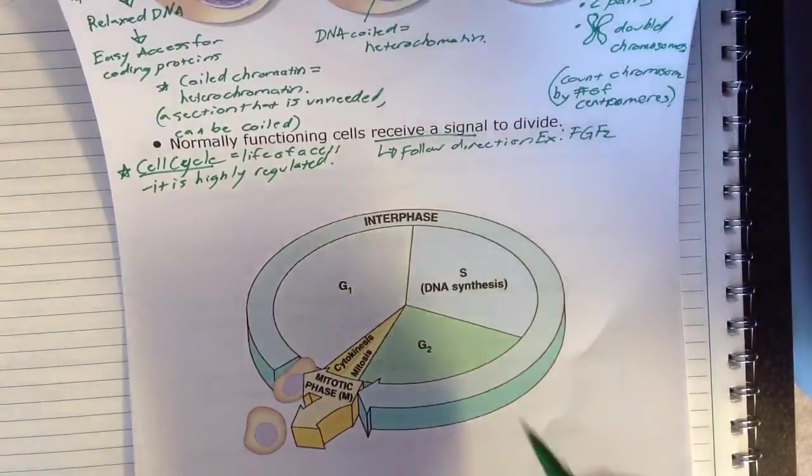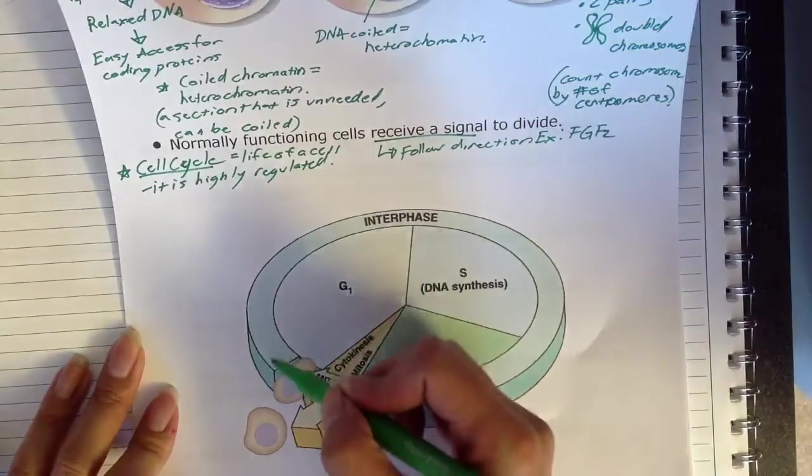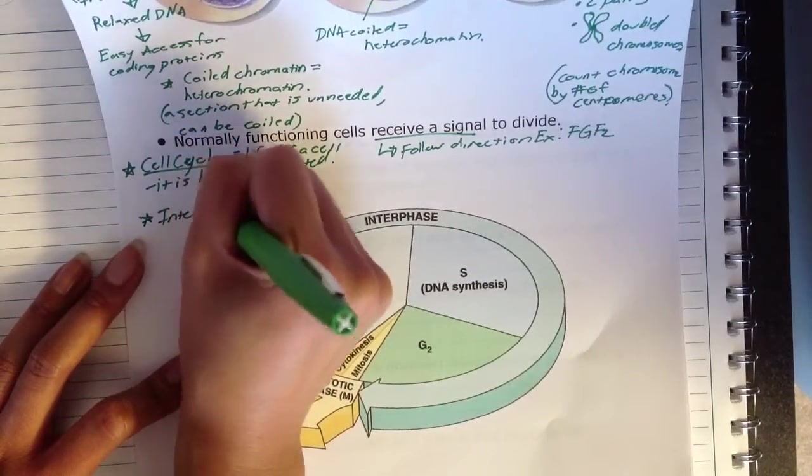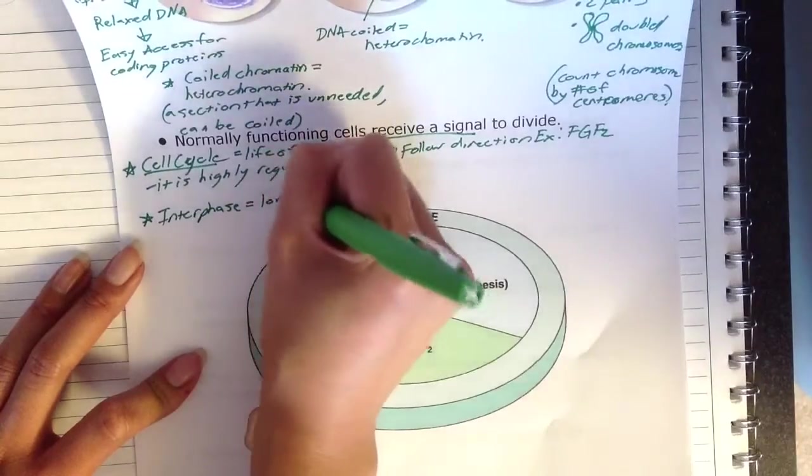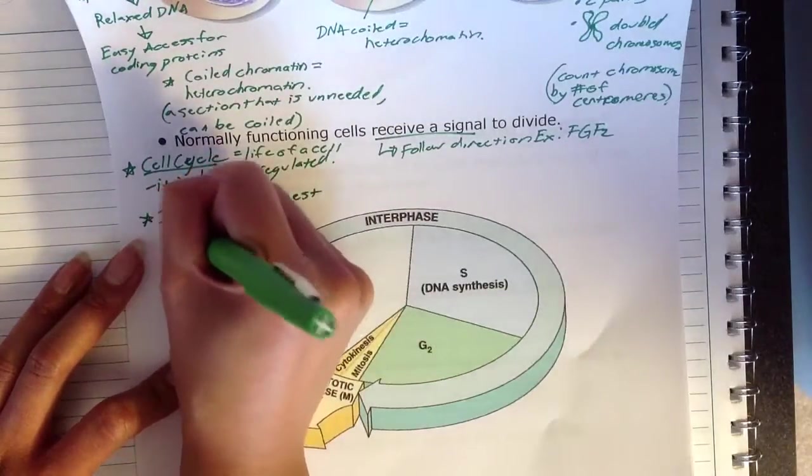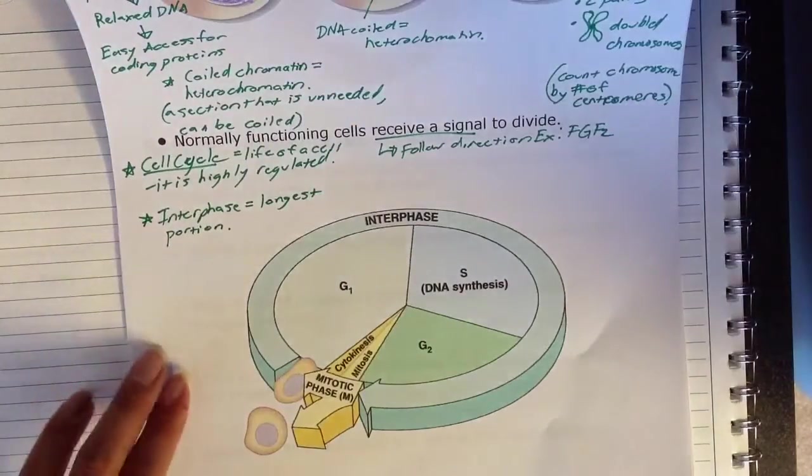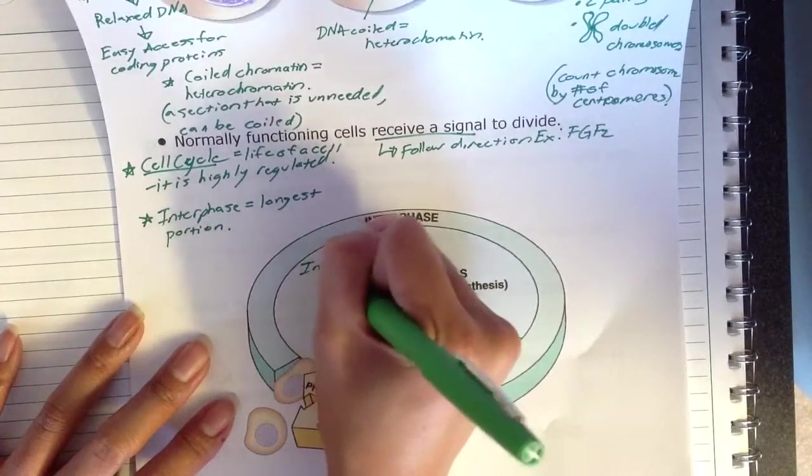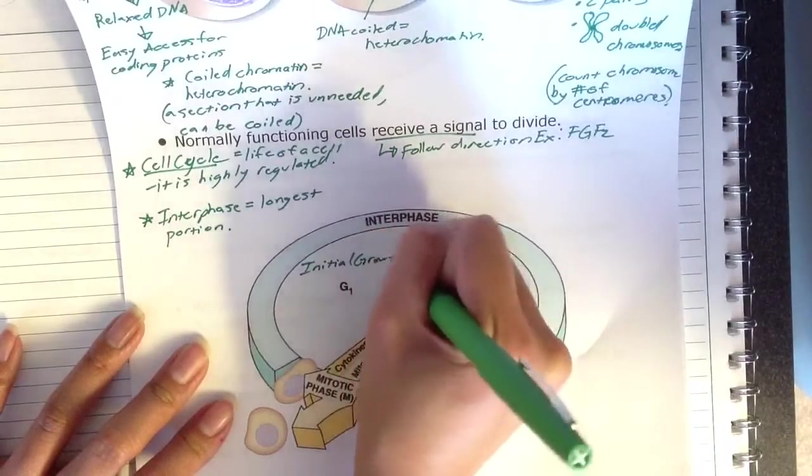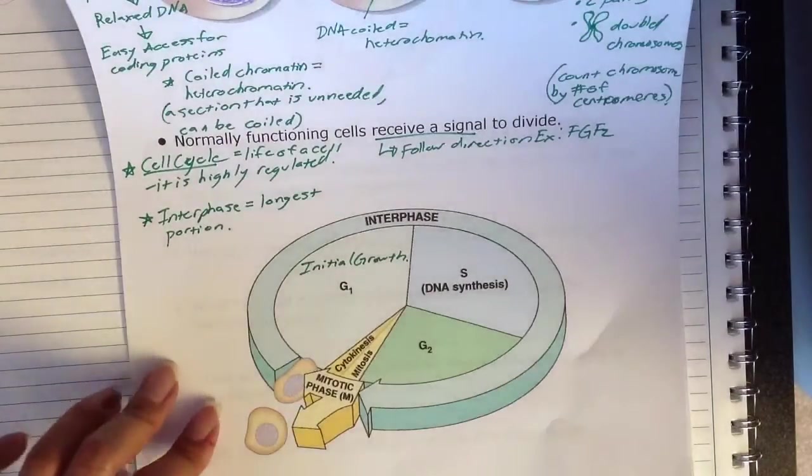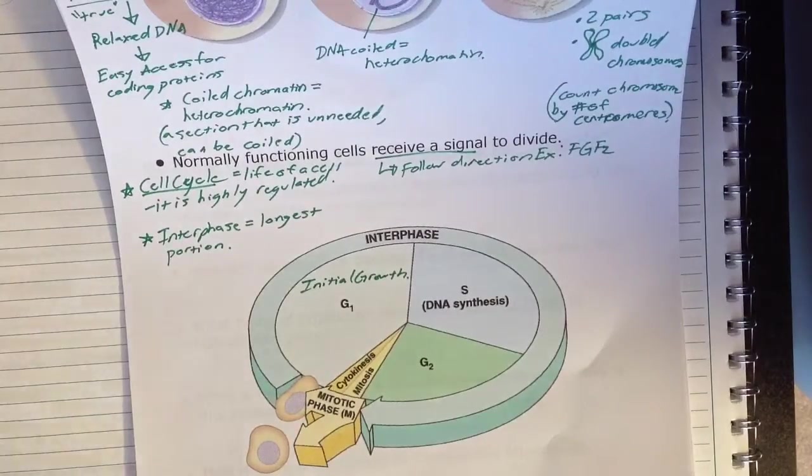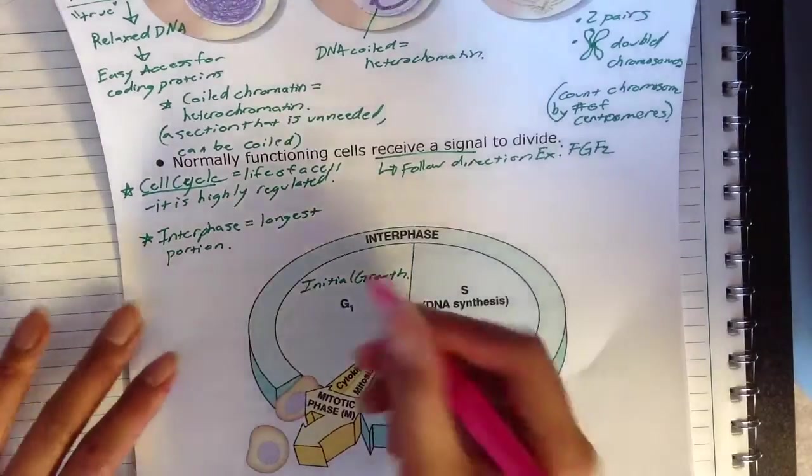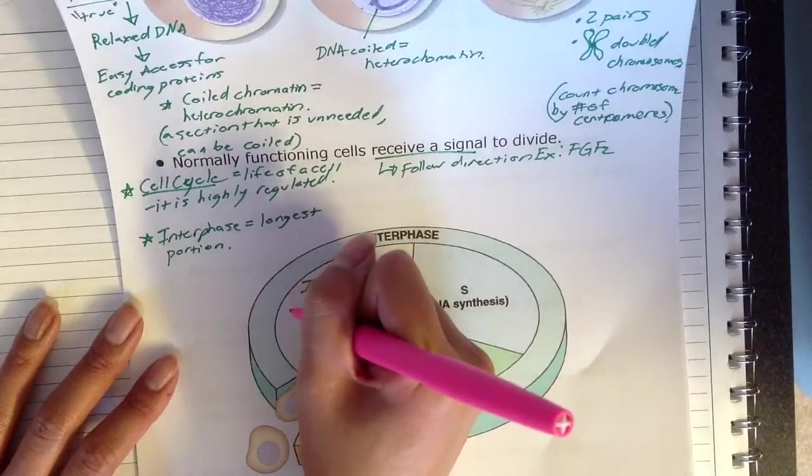And so what you're going to see here in interphase is that this encompasses most of the life of the cell. So interphase is the longest portion. In the G1 phase, G is going to stand for growth. So G1 is going to be our initial growth of a cell. And within that initial growth, a couple of things happen. As the cell grows, it's going to lose some of that surface area to volume ratio. And so that ratio is going to decrease.